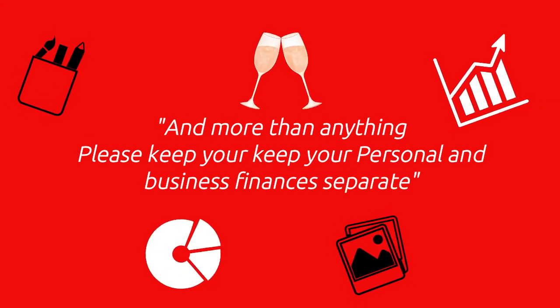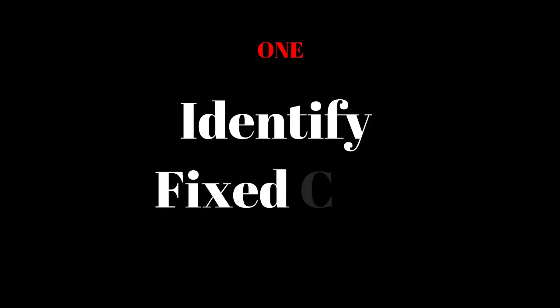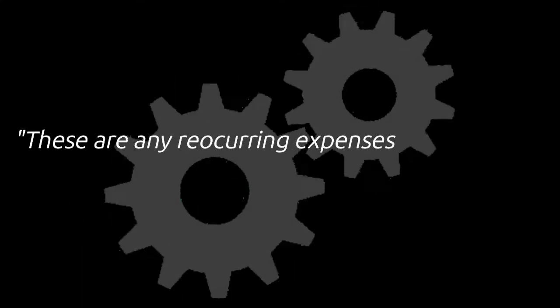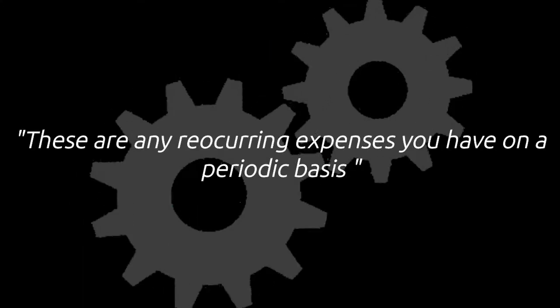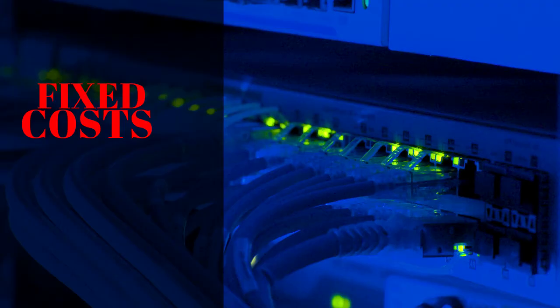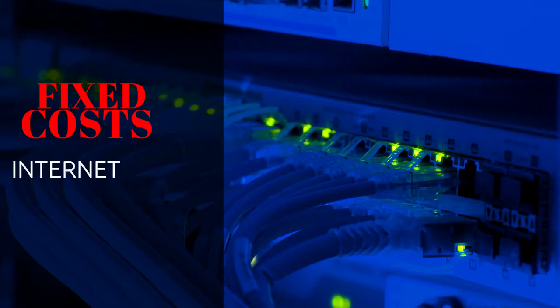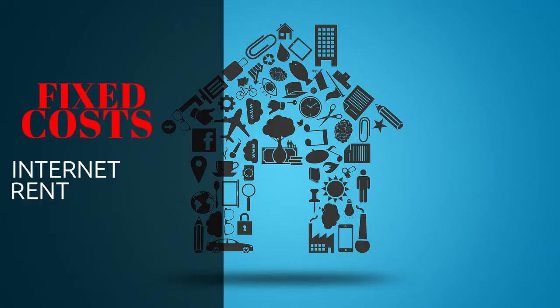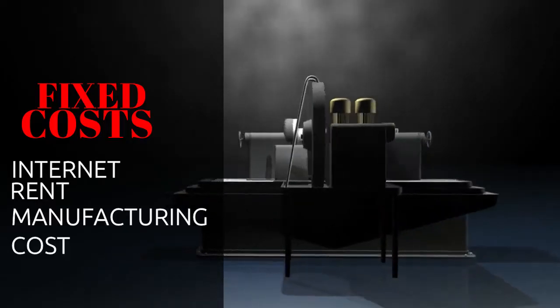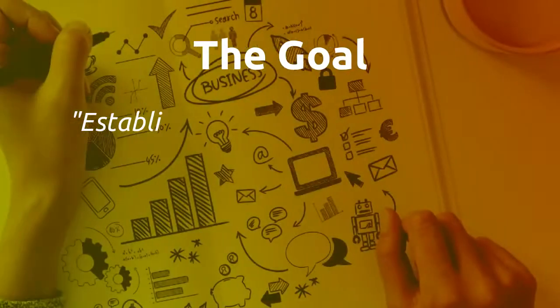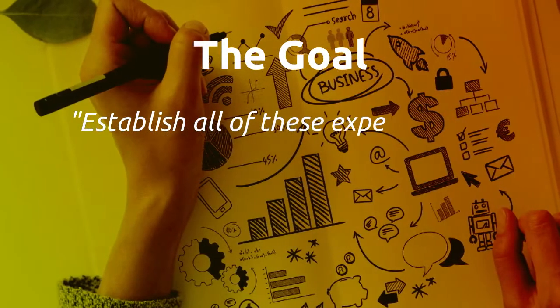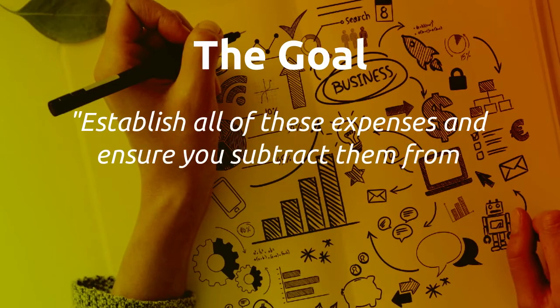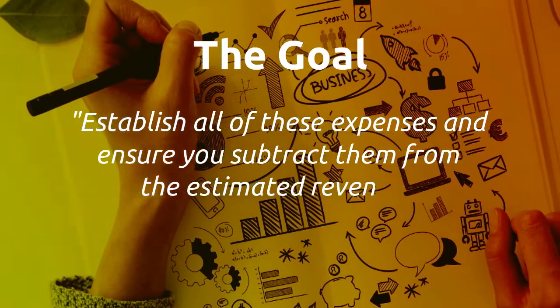Step two: identify fixed costs. These are any recurring expenses you have on a periodic basis. Fixed costs include internet, rent, and manufacturing costs. The goal is to establish all of these expenses and ensure you subtract them from your estimated revenue.